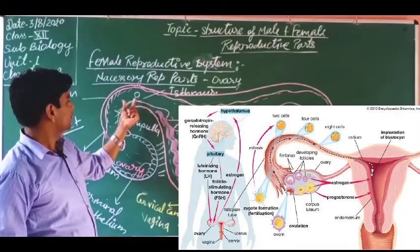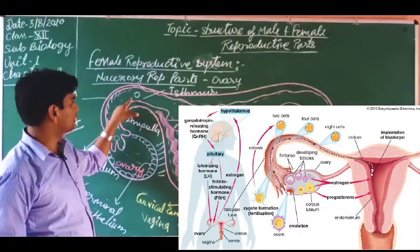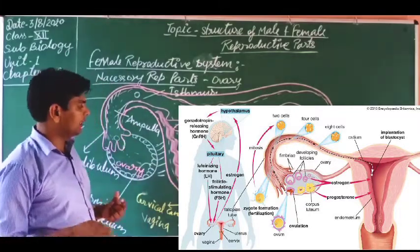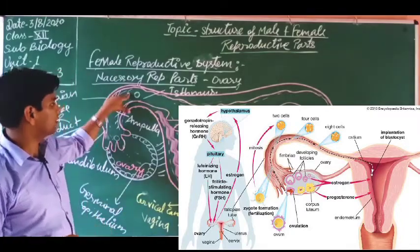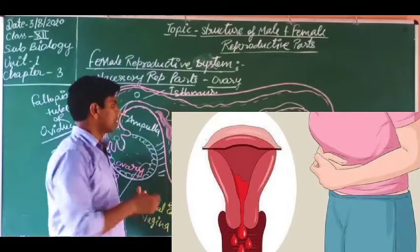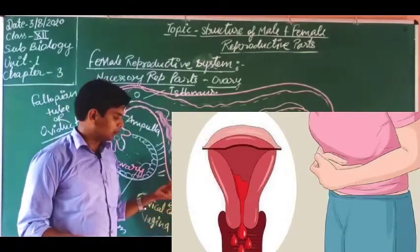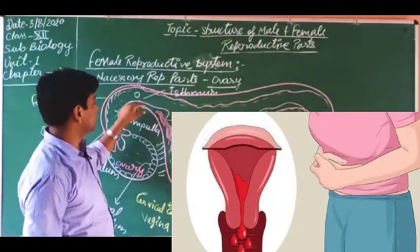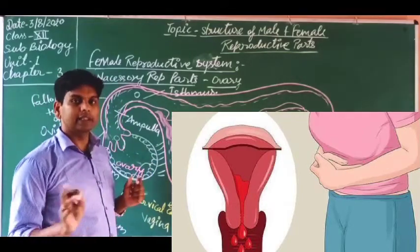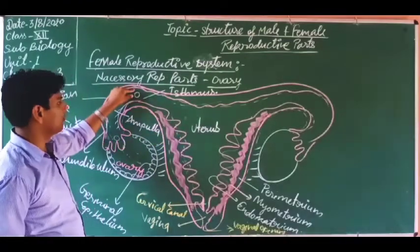If the egg gets fertilized, changes occur in the endometrium — it develops more and more and provides nutrition to the fertilized egg as it develops into an embryo. If fertilization does not take place, the ovary changes its hormonal secretion, and the proliferated endometrium degrades and comes outside with blood — this is known as the menstrual fluid during each menstrual cycle. Menstruation occurs every month due to hormonal changes inside the ovary.